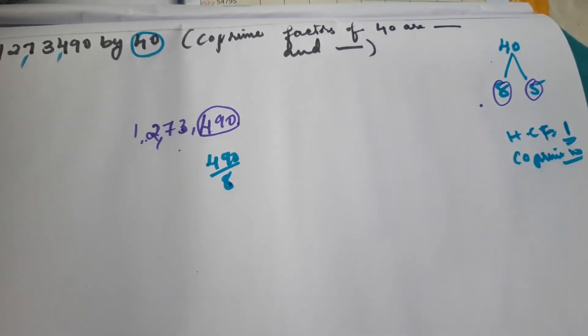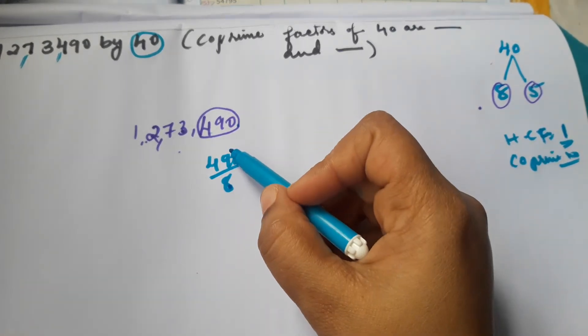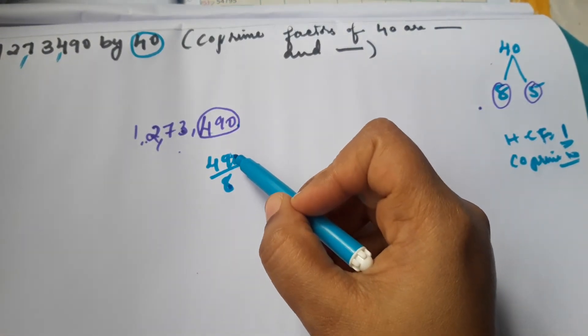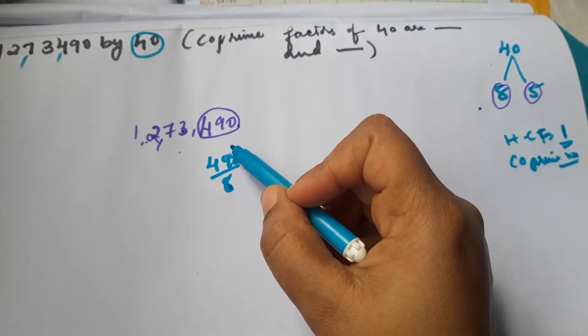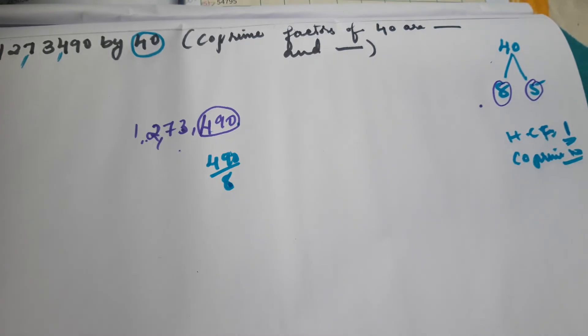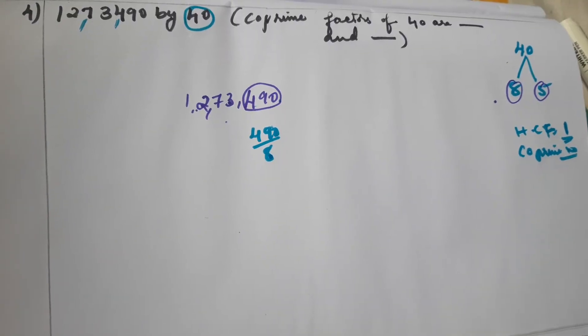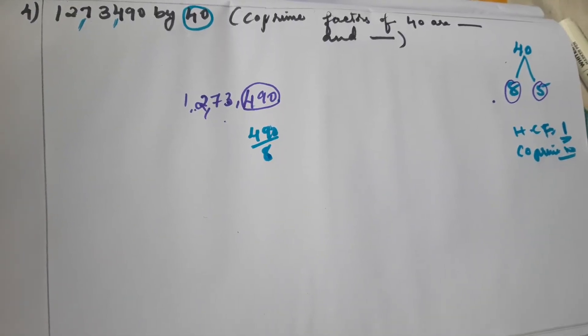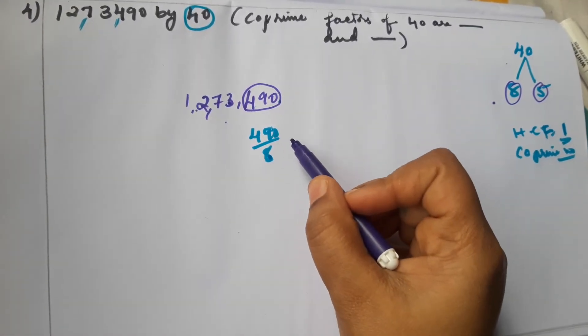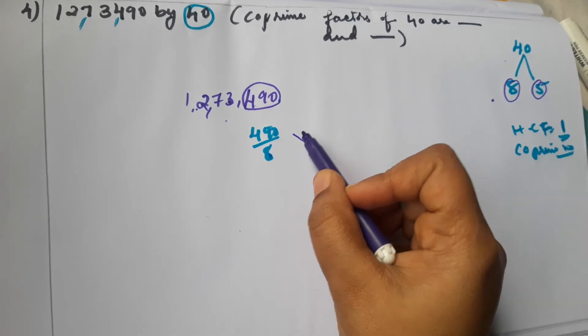Checking 490 by 8: 480 is divisible by 8, but 490 gives a remainder — we get a decimal number. So 490 is not perfectly divisible by 8.